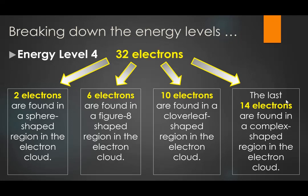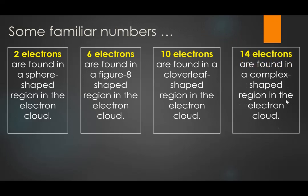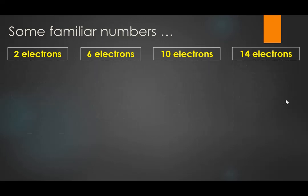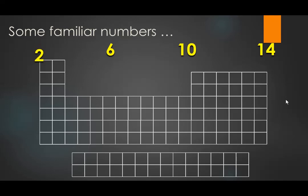The numbers 2, 6, 10, and 14 are sort of hidden numbers in our periodic table. The number 2 corresponds to the first section on the left of the periodic table — two columns wide — representing those two electrons moving in a spherical way. The number 6 corresponds to the section on the right-hand side of the periodic table, which is six elements wide, representing six electrons moving in figure-eight-shaped ways.